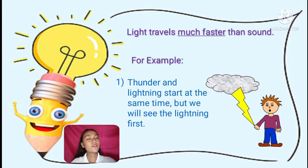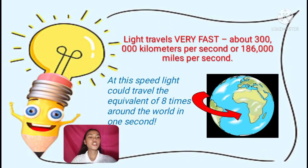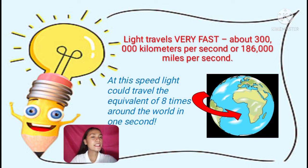Another property of light is that light travels much faster than sound. For example, thunder and lightning start at the same time, but we will see the lightning first. Light travels very fast — about 300,000 kilometers per second, or 186,000 miles per second. At this speed, light can travel the equivalent of eight times around the world in just one second.